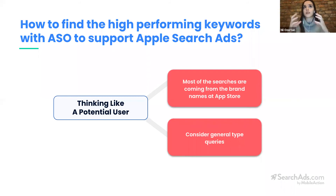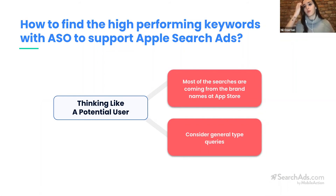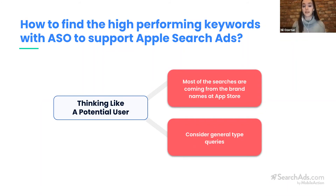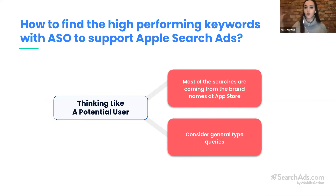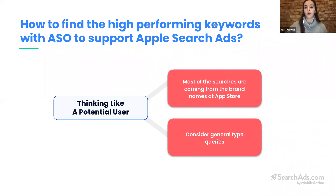Yes, if someone types your brand name, they are looking for you specifically — so you might ask why you need to pay. But a competitor might steal that opportunity. So it's always a good idea to bid on your brand name. Next, you can consider adding general queries. These generic keyword queries will help you acquire users based on general terms, and can also help expand your keyword pool.